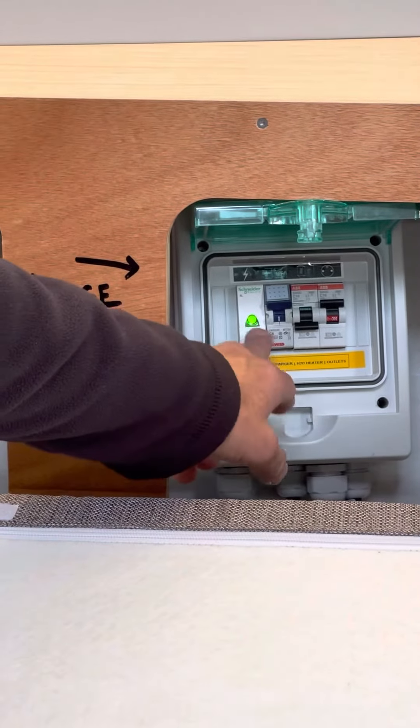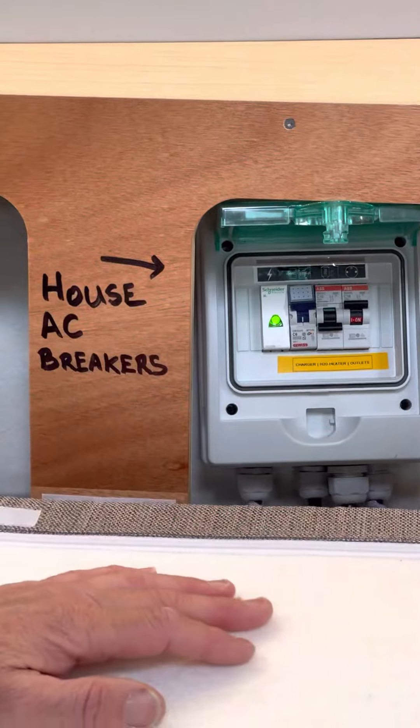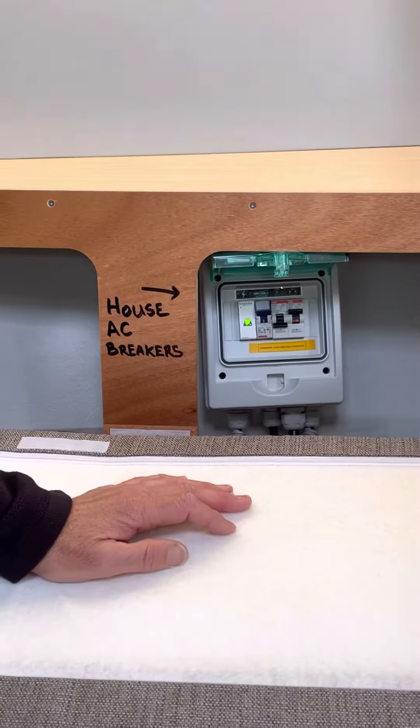As you can see, the AC house breaker is on. We have a light here that tells us we're getting shore power into the vessel.